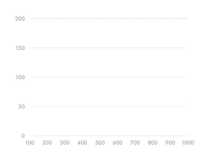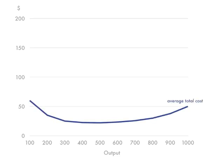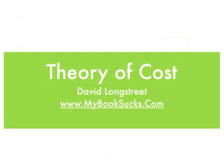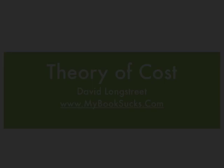Now, if we graph these same lines, dollars are on the y-axis and output is on the x-axis. Average total cost looks something like this. Average fixed cost declines over time — as you produce more, you cover all your fixed costs. Average variable cost goes upward. And marginal cost is really the interesting graph here — it looks almost like a Nike swoosh. It increases in an S-shape. That's just an introduction to the theory of cost.